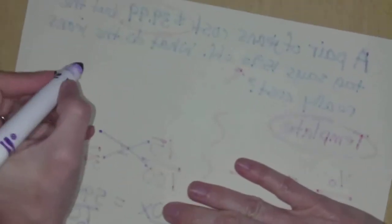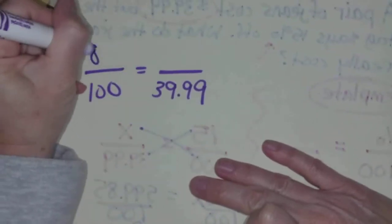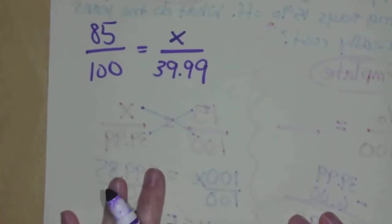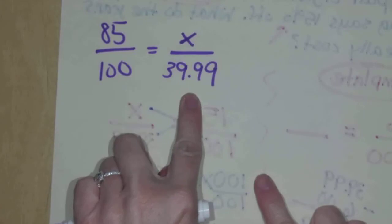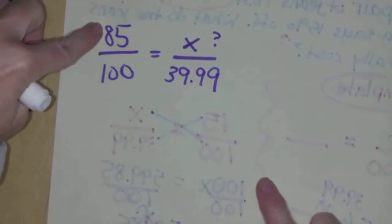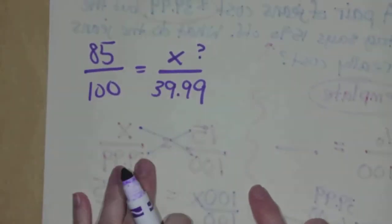If we set up the template, blank equals blank. You know the 100 goes here. You know the jeans were originally $39.99. If you're still paying 85%, how much are you still paying? Out of the $39.99, how many dollars are you paying if you're still paying for 85% of the original cost? You still cross-multiply.